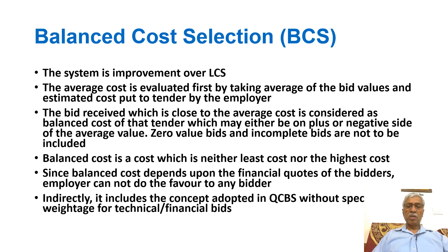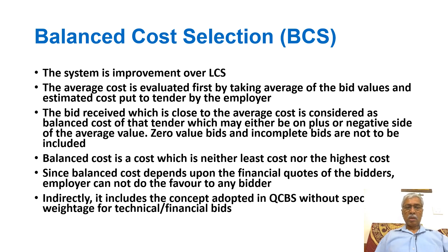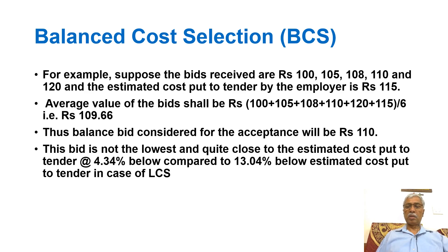The balanced cost is a cost which is neither the least cost nor the highest cost — it is essentially the average cost. This means it indirectly considers quality as well and is not based purely on least cost. It is observed that BCS is close to the QCBS system in outcome. Since the balanced cost depends entirely on the financial quotes of the bidders, the employer cannot favor any bidder, because the employer does not know all bidders' quotes in advance.